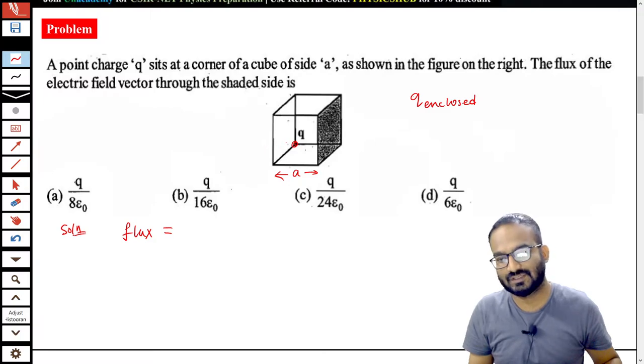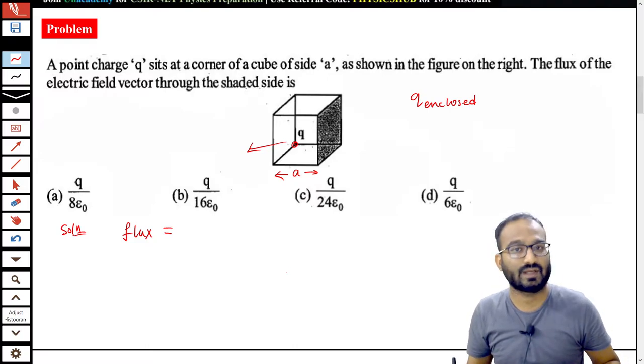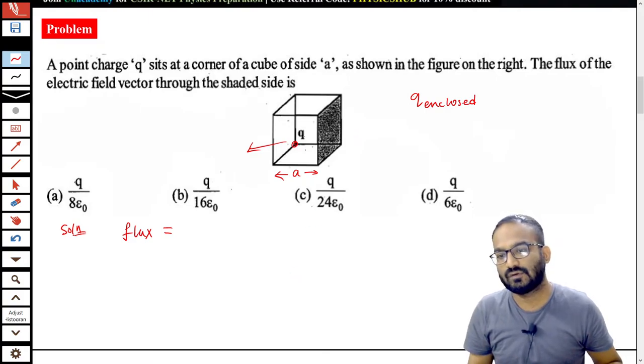If you consider their side or other sides, they are free. So it is not enclosed. So first of all, we have to enclose the charge Q so that we can apply Gauss law and then we will calculate the flux accordingly for this smaller portion.